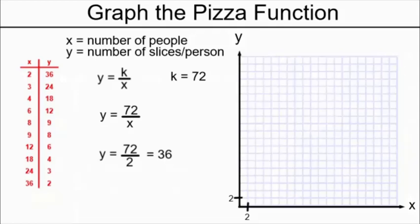If there are two people, they get 36 slices each. That means I'm able to put a dot on my coordinate plane right here. Notice that I have scaled my axes so that the squares are going up by twos in order to make sure big numbers like 36 will fit.